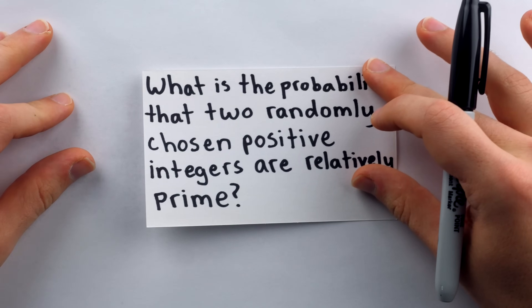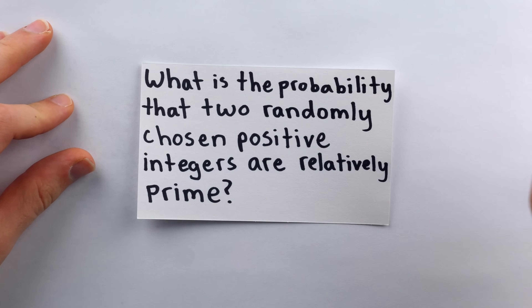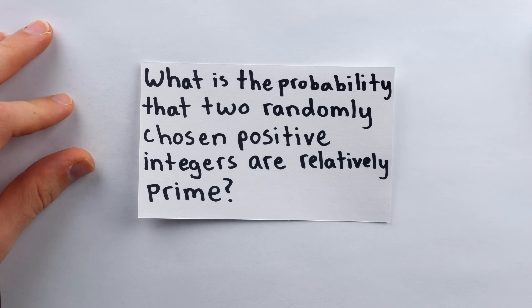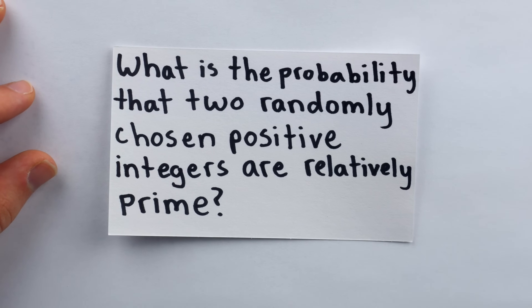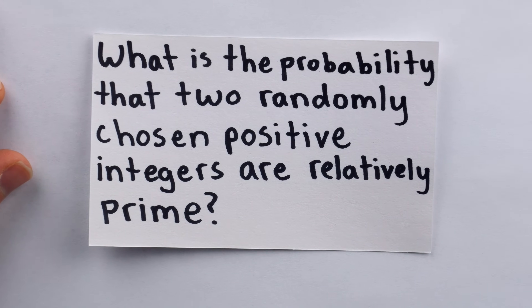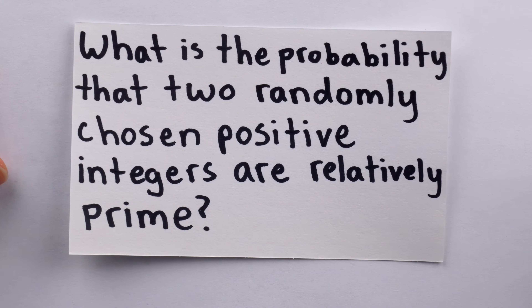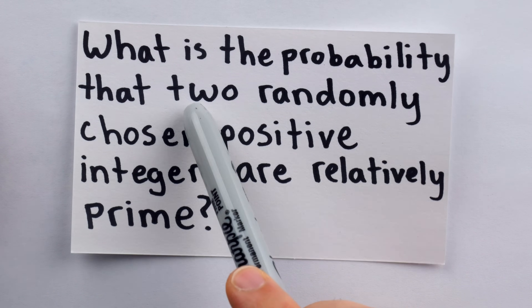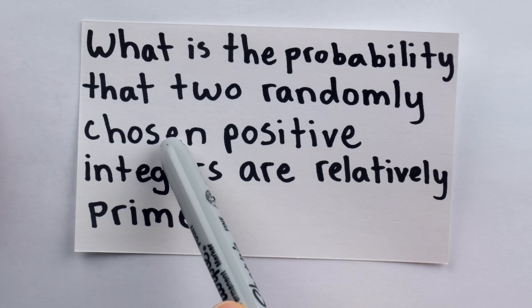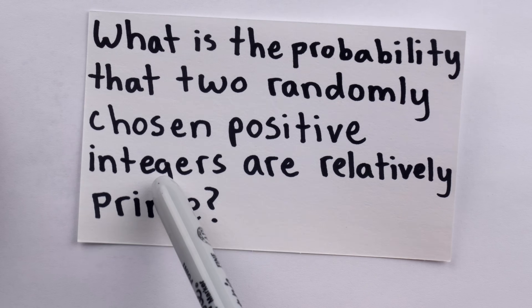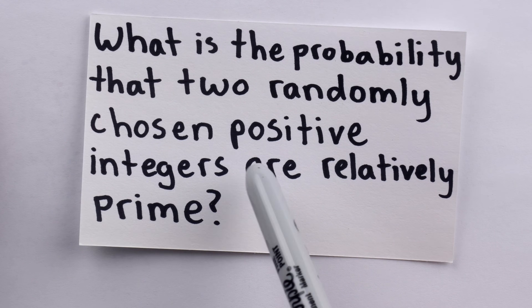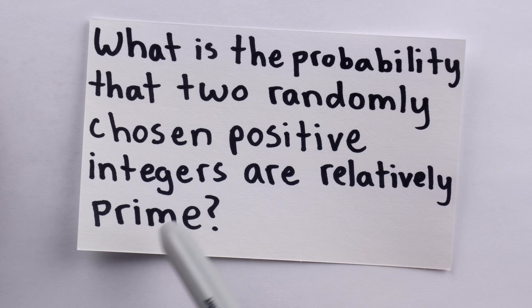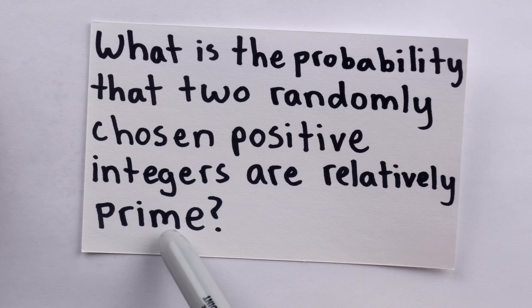Today, we're going to solve a really cool problem which will bring us from number theory to probability and calculus. The question is this: what's the probability that two randomly chosen positive integers are relatively prime?